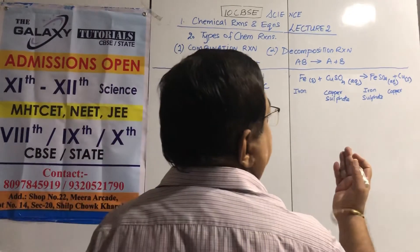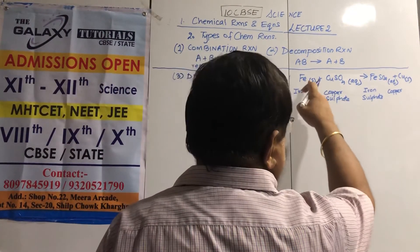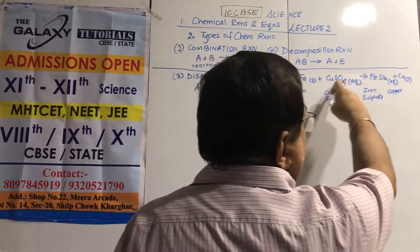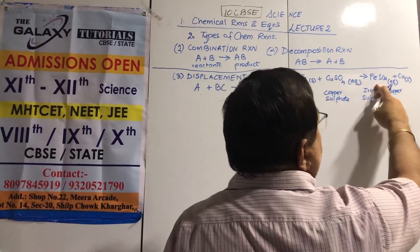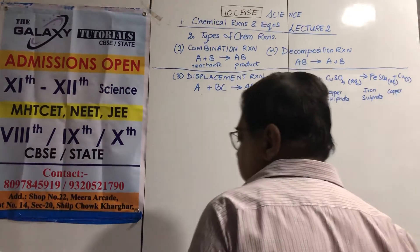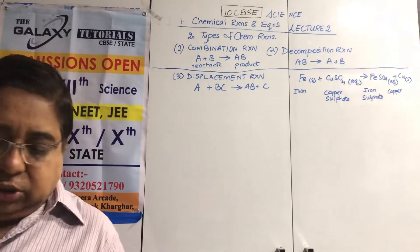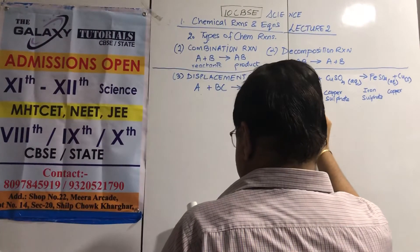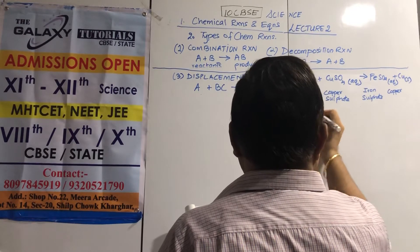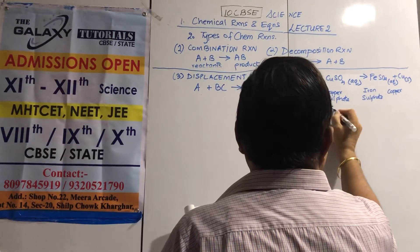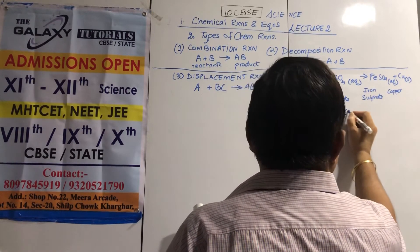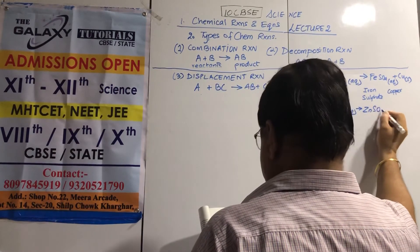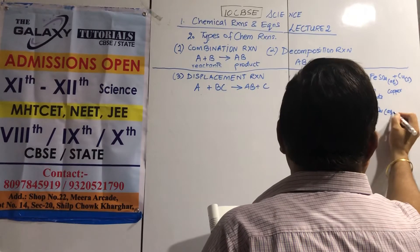Balancing: this equation is already balanced — no coefficients needed. The formulas are: iron is Fe, copper sulfate is CuSO4, iron sulfate is FeSO4, and copper is Cu.